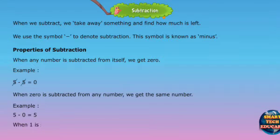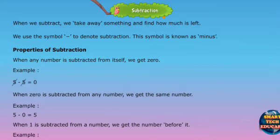When 1 is subtracted from a number, we get the number before it. Example: 5 minus 1 equals 4.